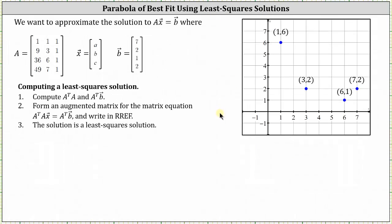For review, when finding the least squares solution to the equation matrix A times vector x equals vector b: step one, compute A transpose times A and A transpose times vector b; step two, form the augmented matrix for the equation A transpose A times vector x equals A transpose times vector b, and write it in reduced row echelon form. The solution is the least squares solution, giving us the values of a, b, and c for the parabola of best fit.